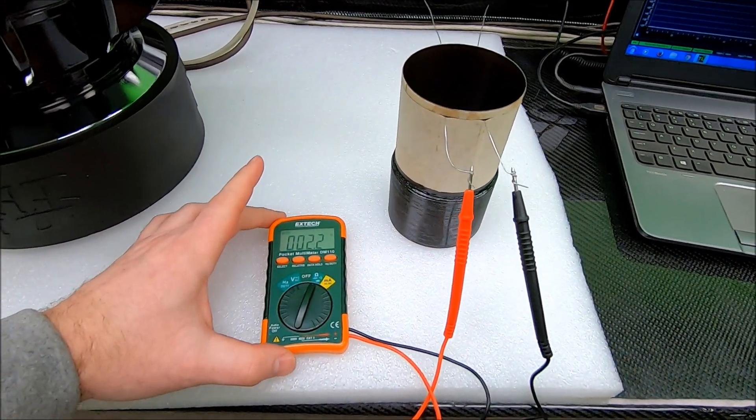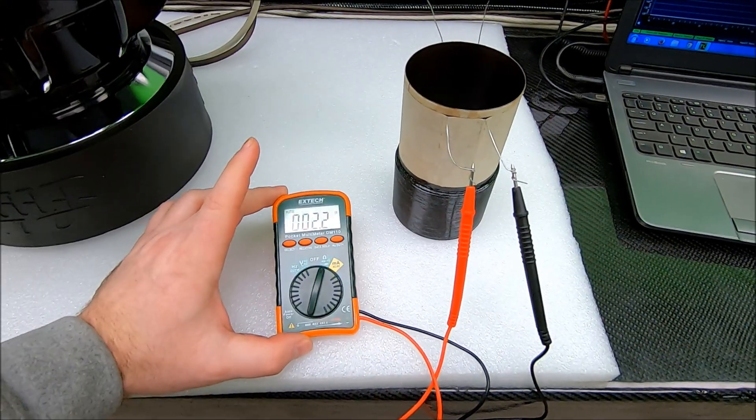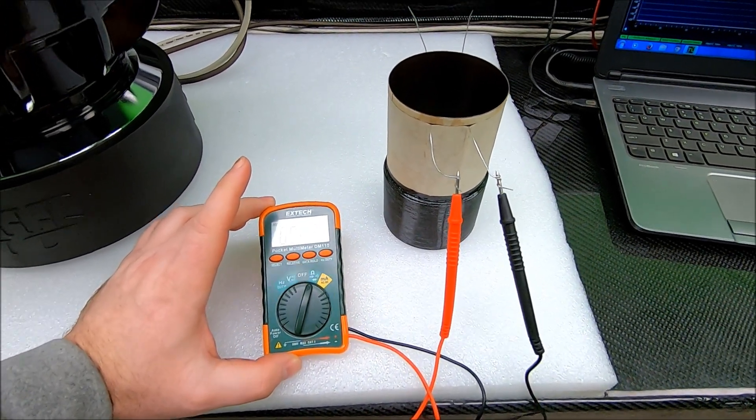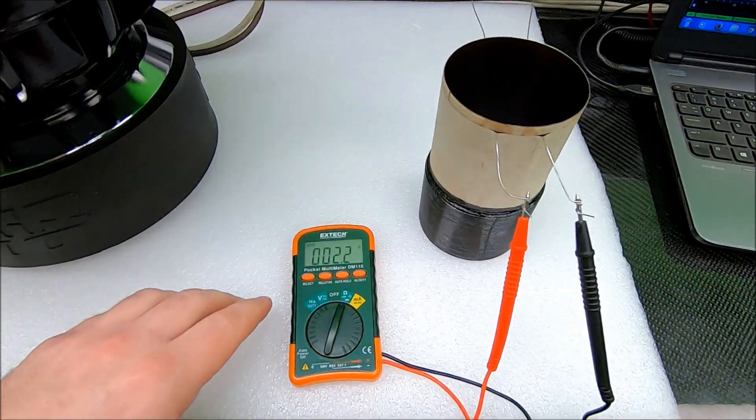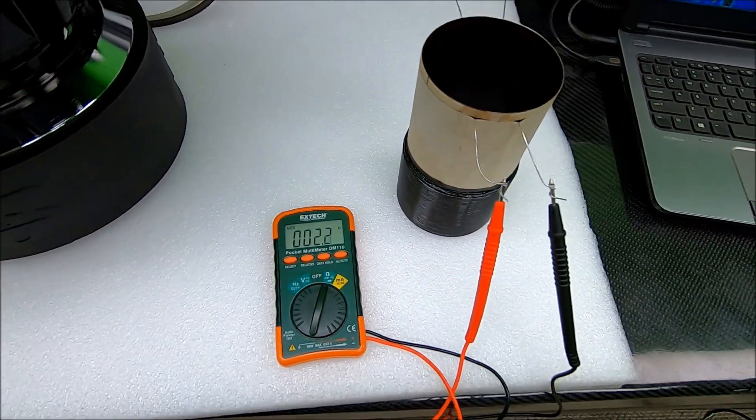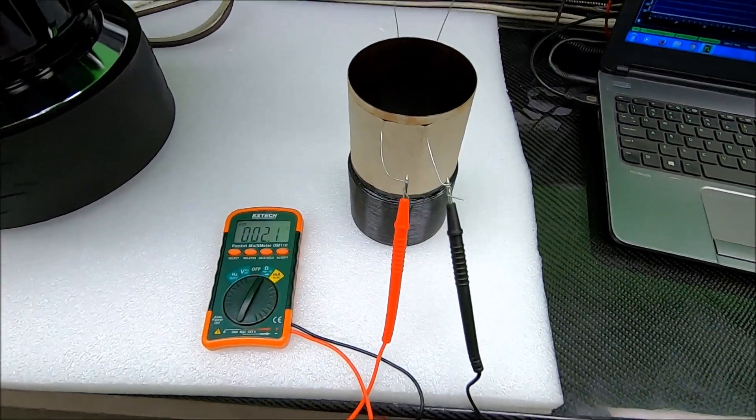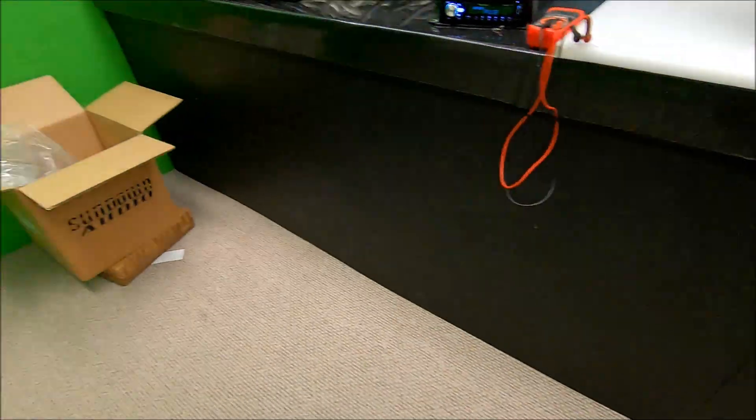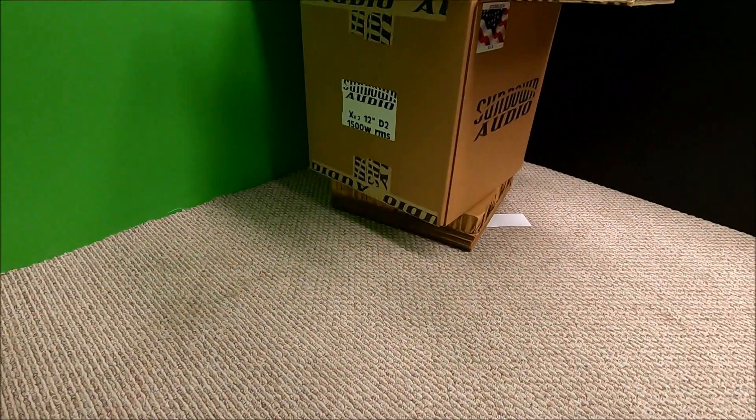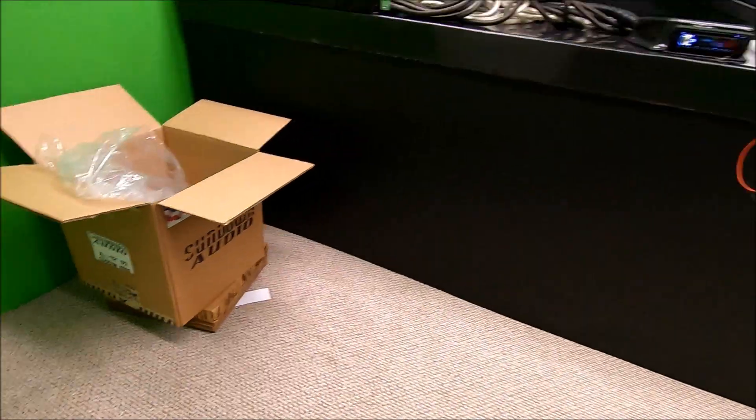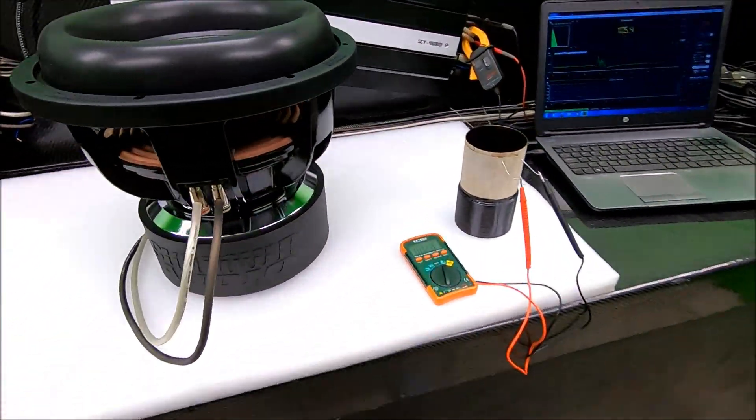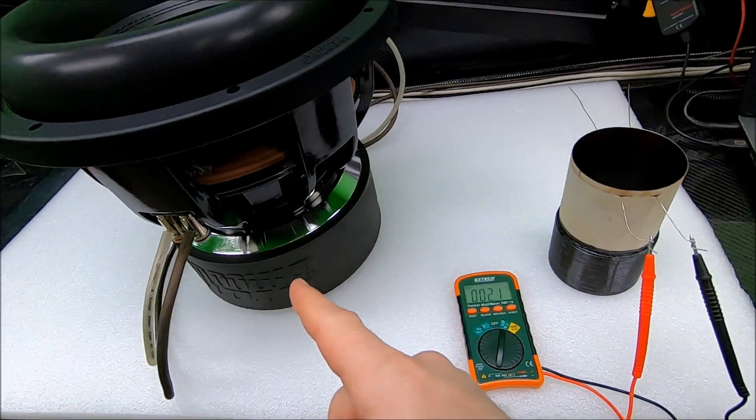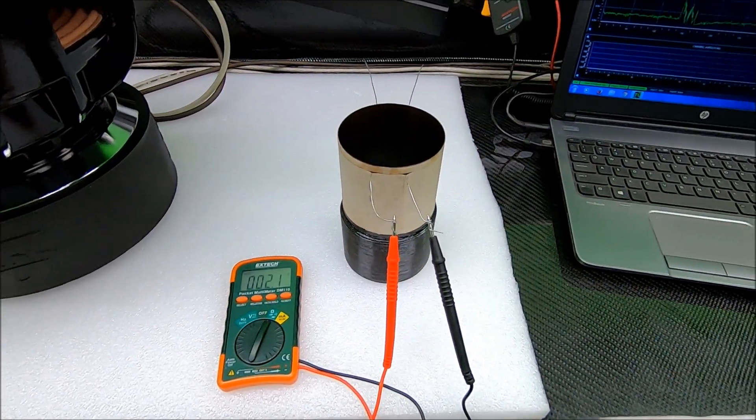Well technically we're reading DCR right now. We're reading the DC resistance. So you can see it's varying just a little bit. But this is the DCR of this coil. Now this is the same dual 2 ohm subwoofer. You can see our box that came in down there, X12 D2. So this is a dual 2 coil, same one that's in this sub.